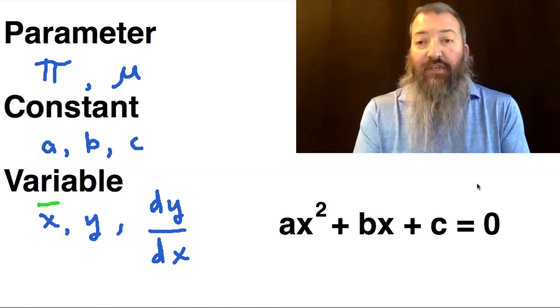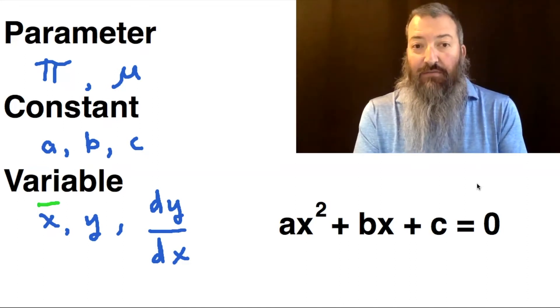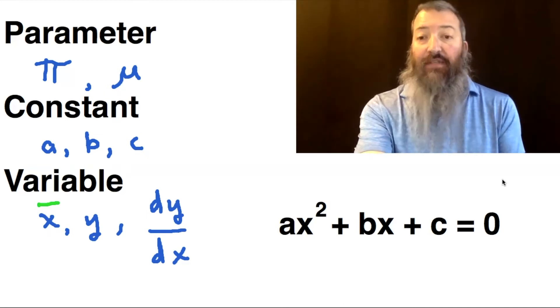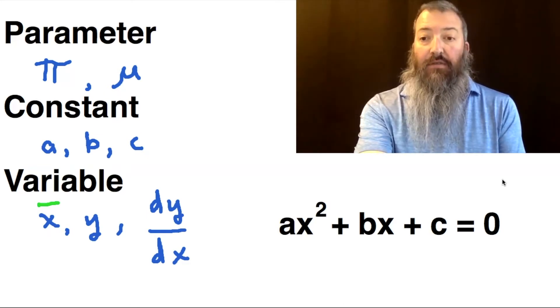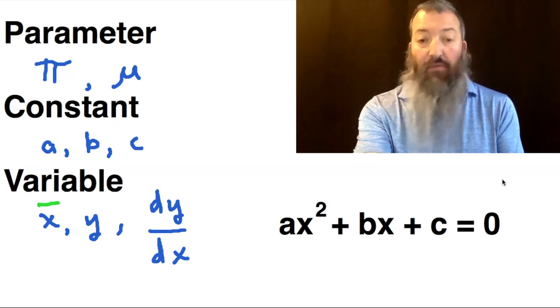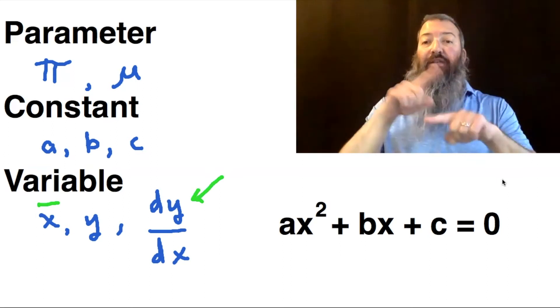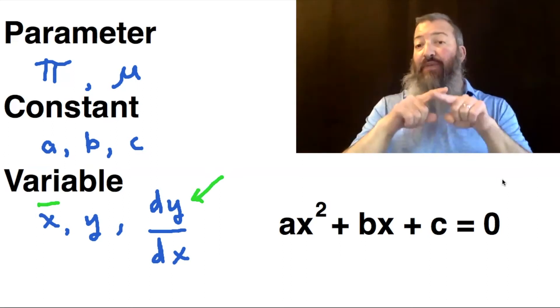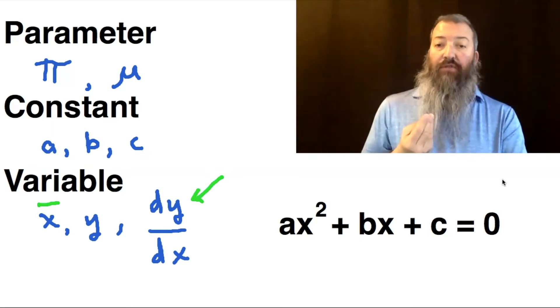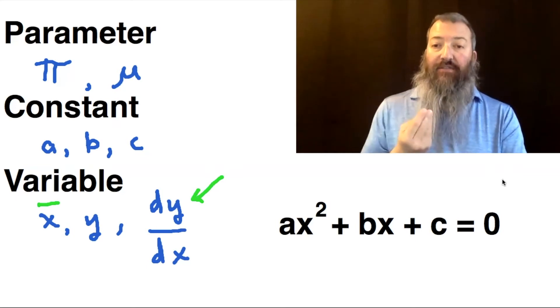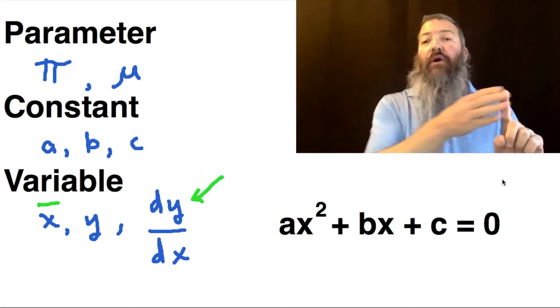It represents rate of change, differential, the tangent. And in this case, the top variable, the y, is known as the dependent variable because it depends on the input. It depends on the x. It depends on where you are in the number.